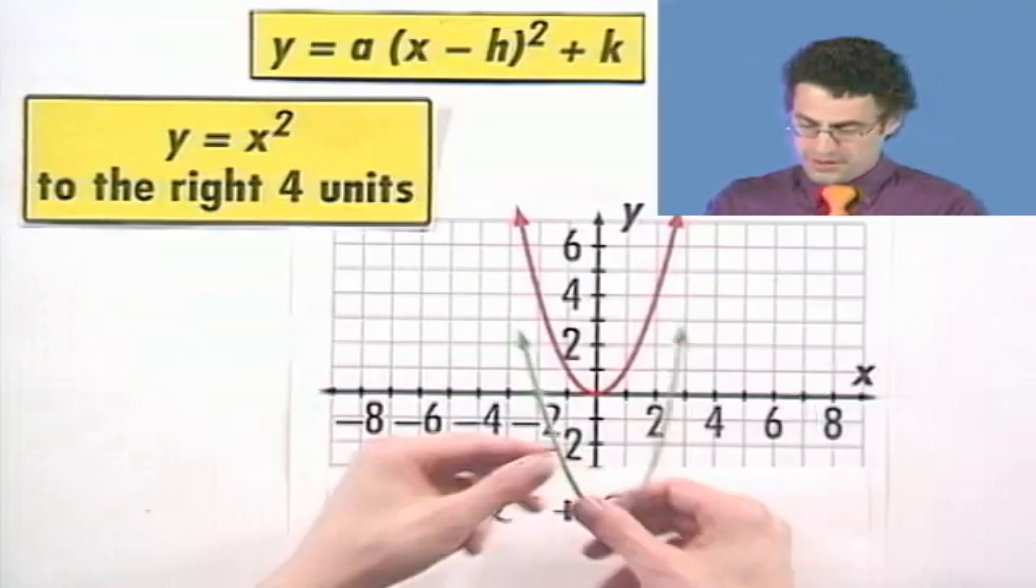How about this? Let's look at the same parabola, but now move it to the right four units. So now that's going to be an x direction, right? Right is an x direction. One, two, three, four. Well, now where is the vertex? The vertex is now located at 4, 0.